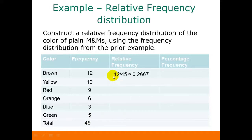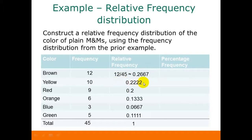Our first relative frequency is 12 divided by 45, which gives us approximately 0.2667. Then we divide 10 by 45, 9 by 45, 6 by 45, 3 by 45, and 5 by 45 to get the rest of our relative frequencies. Once you have all these calculated, you can check your answer by adding up all the relative frequencies — it should come out to 1 or something very close to it. With rounding error you might get 0.99 or 1.01, but it should be very close to 1.